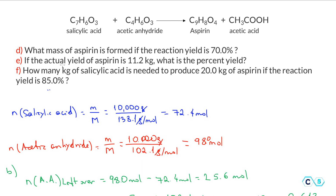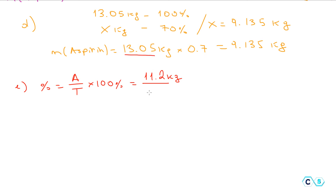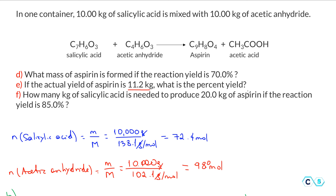Question E asks: if the actual yield is 11.2 kilograms, what is the percent yield of the reaction? The percent yield formula is actual yield over theoretical yield times 100%. So 11.2 kilograms divided by 13.05 kilograms times 100% gives us about 85.9% for the reaction yield. If 11.2 kilograms is produced, this corresponds to 85.9%.